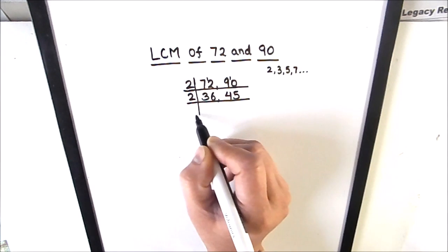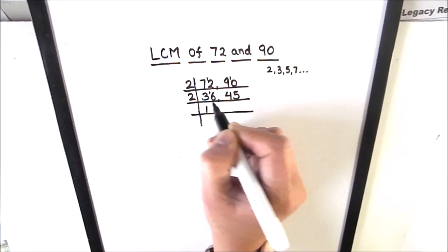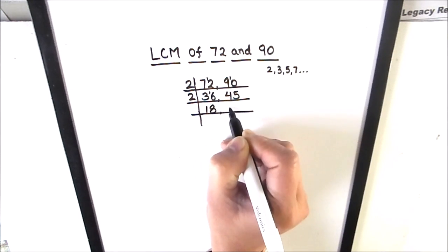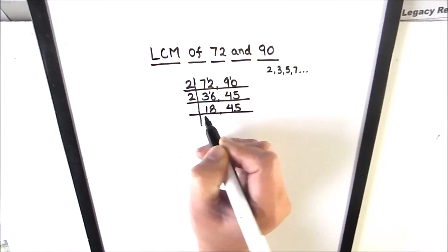Again we'll use 2 to divide 36: 2 times 18 is 36, and 45 is not fully divisible by 2 so we'll write it as is.